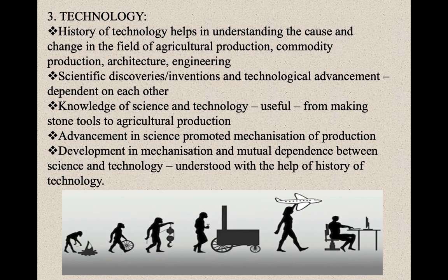The advancement of science promoted the mechanization of production — the use of machines — in order to make more and more products so that more profit comes in. It is necessary to know the history of technology in order to understand the development of mechanization and the mutual dependence between science and technology. With advancement in science, there is advancement in technology as well, and because of that there is advancement in mechanization — where production is increased, man can sell more in the market and gain more profits. This is how it forms a cycle.